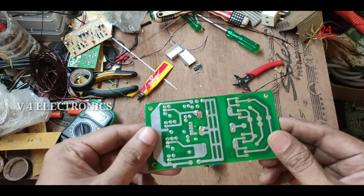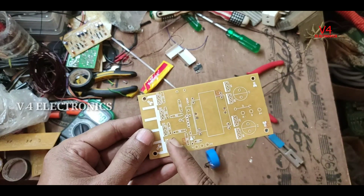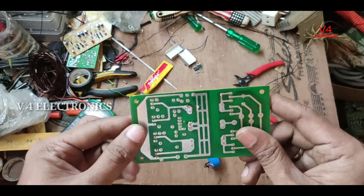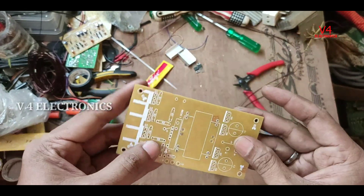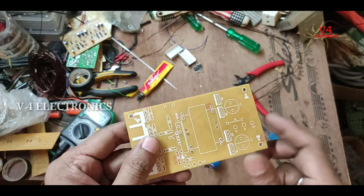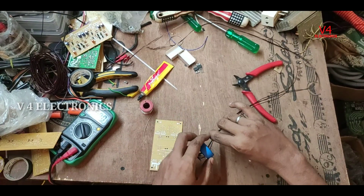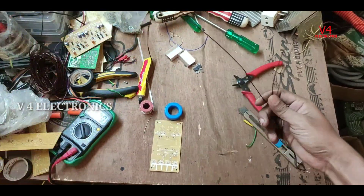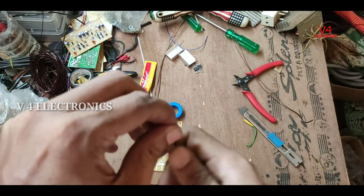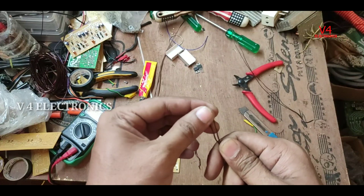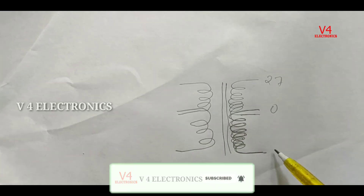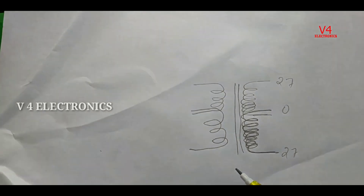We are using a PCB. This is a PCB. This is the primary and secondary side. This is the key. Output and Input. This is a bridge grip. This is the key. This is a huge control.